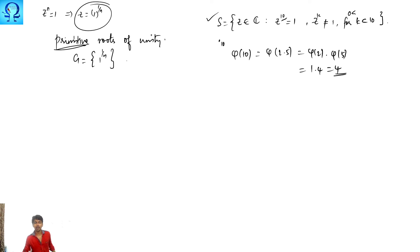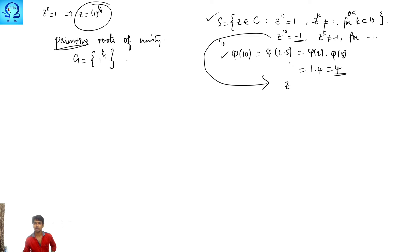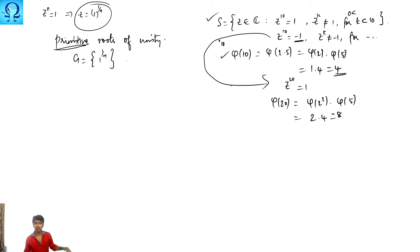Sometimes you may be given z to the power 10 equals minus 1, with z to the power k not equal to minus 1 for smaller k. In this case you are dealing with minus 1 rather than 1. To handle this, square both sides to get z to the power 20 equals 1. Then phi of 20 equals phi of 4 times phi of 5, giving 2 times 4 which is 8 elements satisfying the condition.